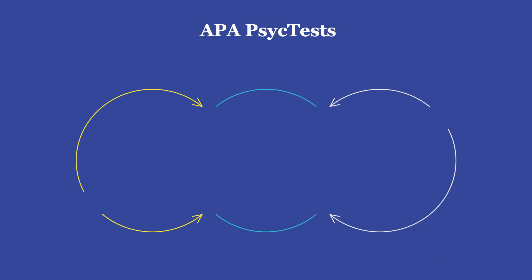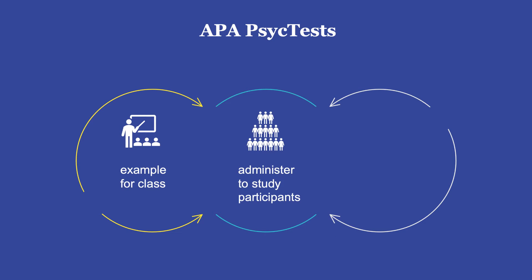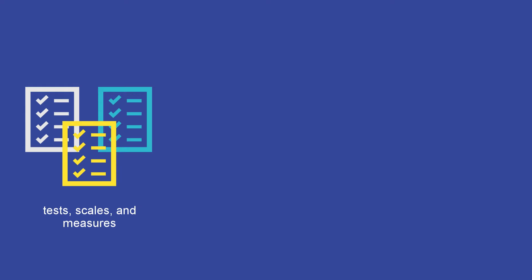Whether you plan to use a test as an example for class, to administer to study participants, or to review as a starting point to develop your own test, APA PsychTest is your ideal starting point. This database provides information on tests, scales, and measures that were originally published in journal articles.